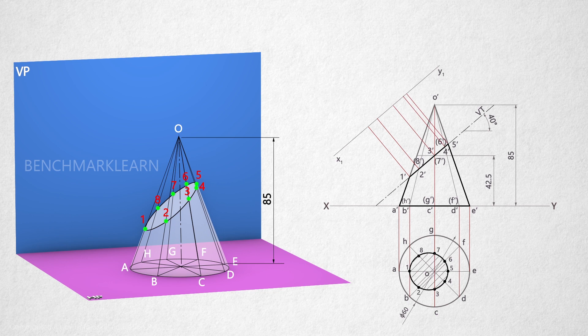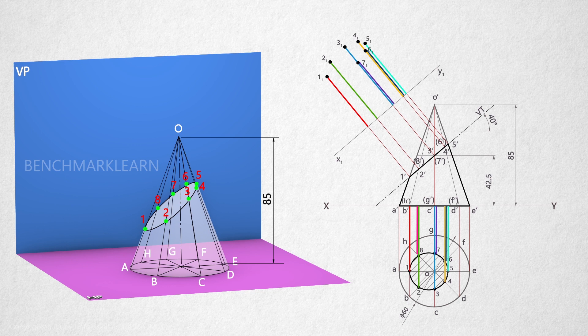Measure the distances of 1, 2, 3, 4, 5, 6, 7, 8 from the XY line and mark the distances from X1Y1 to obtain 1₁, 2₁, 3₁, 4₁, 5₁, 6₁, 7₁, 8₁.